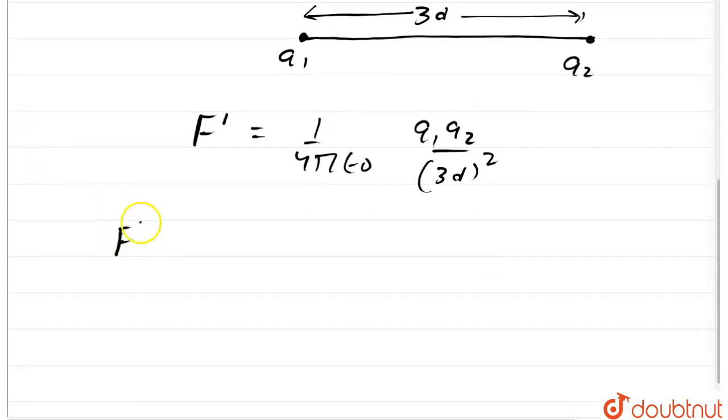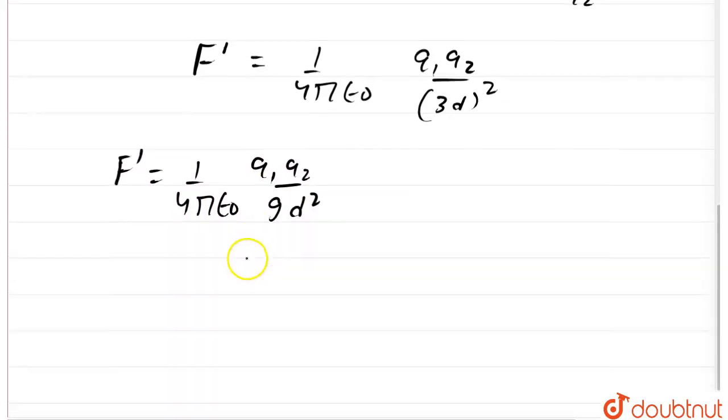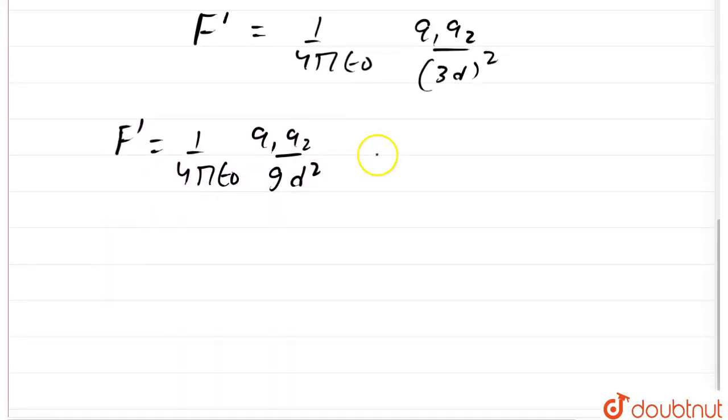Now, this becomes f dash is equal to 1 upon 4 pi epsilon 0 q1 q2 upon 9 into d square. Let us say this is equation number 2.